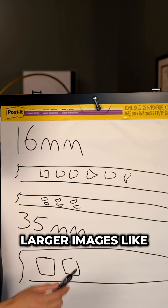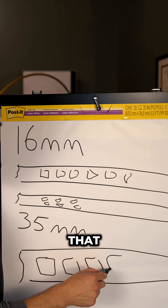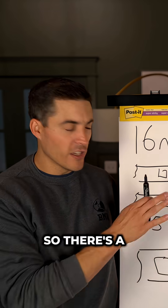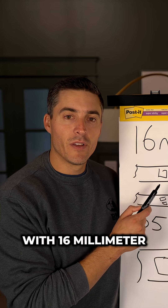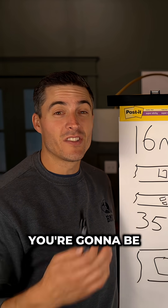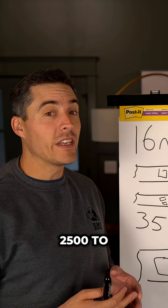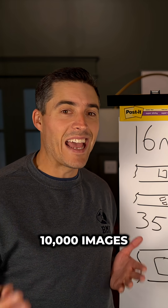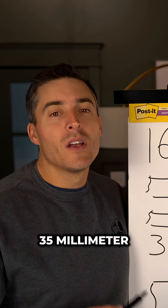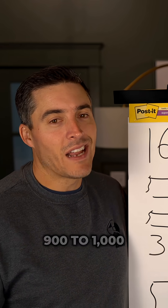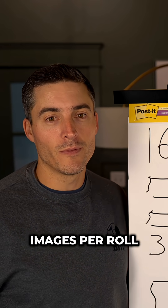So you'll have larger images with 35 millimeter film. With 16 millimeter film, you're going to be somewhere between 2,500 to even upwards of 10,000 images, depending on the type. With 35 millimeter, probably around 900 to a thousand images per roll.